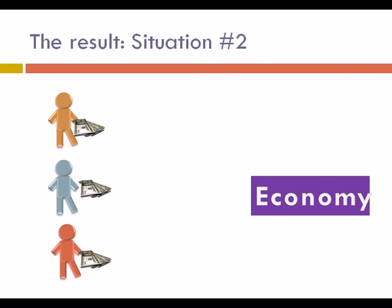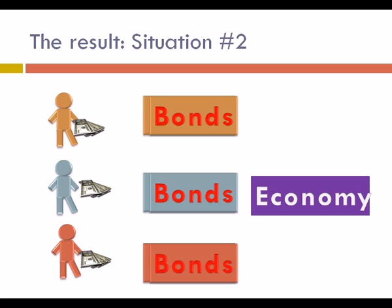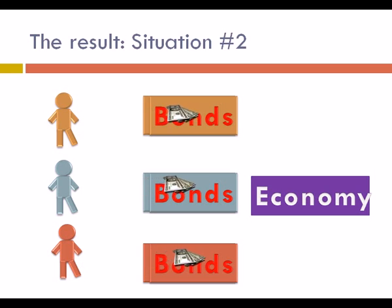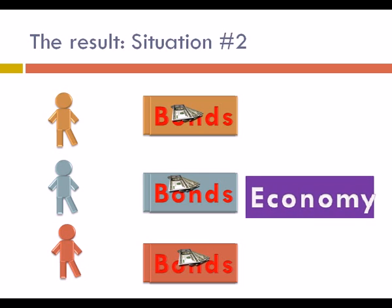Less money to lend is less money to spend. People don't want to borrow as much because of high interest rates, preferring to save. In fact, they would love to save their money in interest-correlated products such as bonds and treasury bills. Because they are not consuming as much and are saving more, this helps curb economic growth.